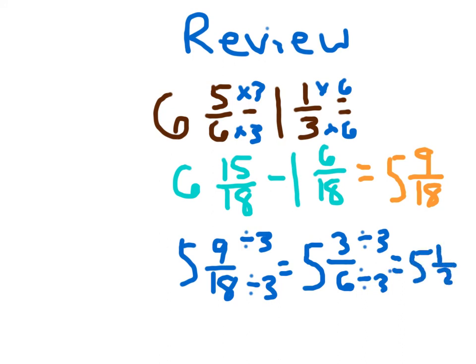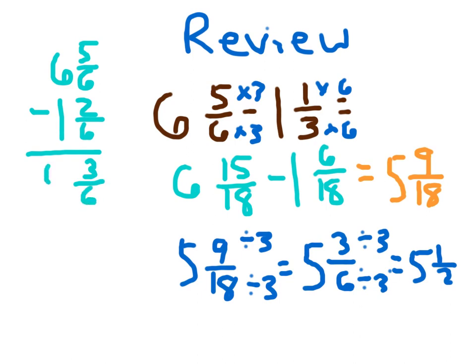Now the smarter mathematician's approach: looking at the original problem as six and five-sixths minus one and one-third written vertically, one and one-third is one and two-sixths. Five-sixths minus two-sixths is three-sixths, six minus one is five, then simplify to five and one-half by dividing by three. No matter which approach we take, we still end up with the same answer when we put it into simplest form, because we chose a like denominator and followed the appropriate rules.